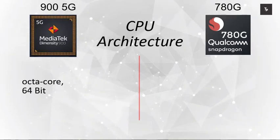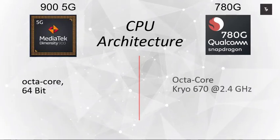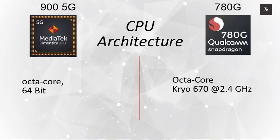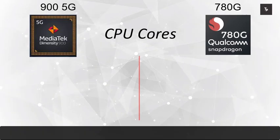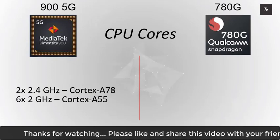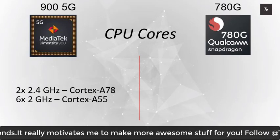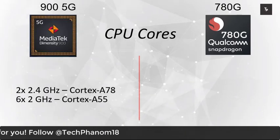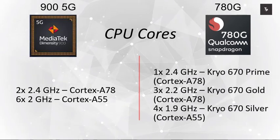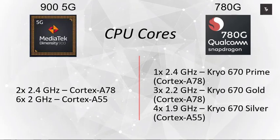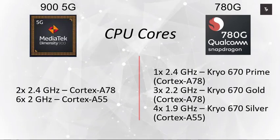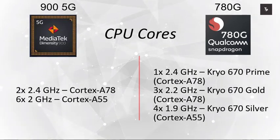Moving on to the CPU architecture, both processors are octa-core and 64-bit. The Snapdragon 780G uses a Kryo 670 at 2.4 GHz. The MediaTek Dimensity 900 5G has two cores of 2.4 GHz Cortex-A78 and six cores of 2.0 GHz Cortex-A55. The Snapdragon variant has a different architecture: one core of 2.4 GHz Cortex-A78, three cores of 2.2 GHz Cortex-A78.